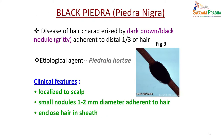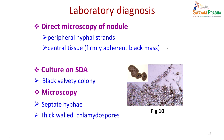Another similar presentation is black piedra or piedra nigra, where the hair has dark brown or black gritty nodules adherent to the outer third of the hair, surrounding it all around. The etiological agent is Piedraia hortae. On microscopy you will see peripheral hyphal strands and a central firm black mass with hyphae around. On culture, black velvety colonies are obtained, and microscopy shows septate hyphae and thick-walled chlamydospores. Treatment is the same as white piedra.